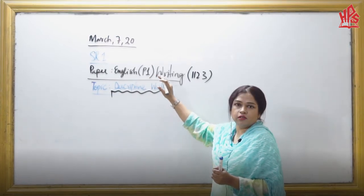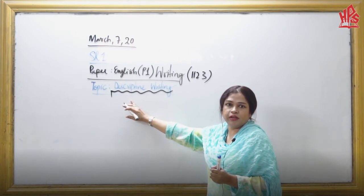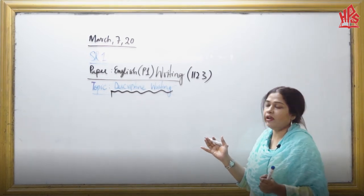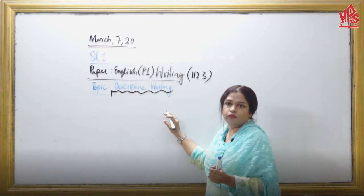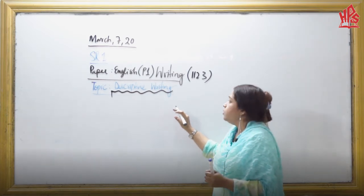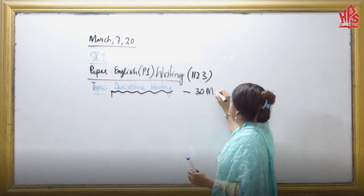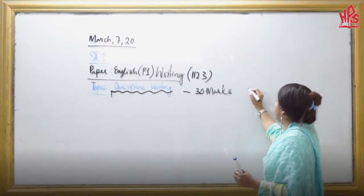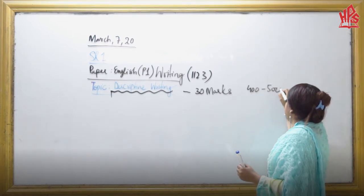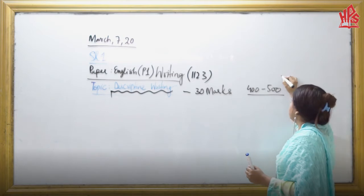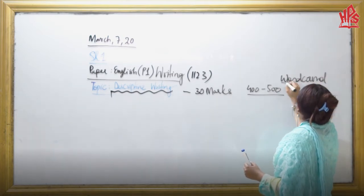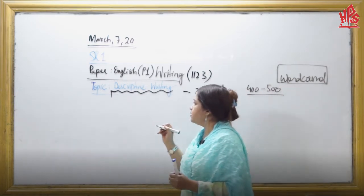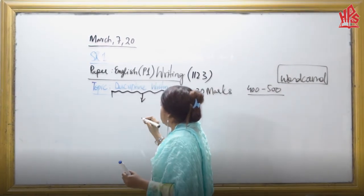Writing is what I have concern over here, and we have descriptive writing as our topic. Apart from this, you have narrative writing and argument writing. Right now I have chosen descriptive writing to give you a reminder on how you are going to start. First of all, you need to know that 30 marks you are going to get in descriptive writing, where the word count would be around 400 to 500 words. This is the target you need to work out, and then we will talk about the structure.